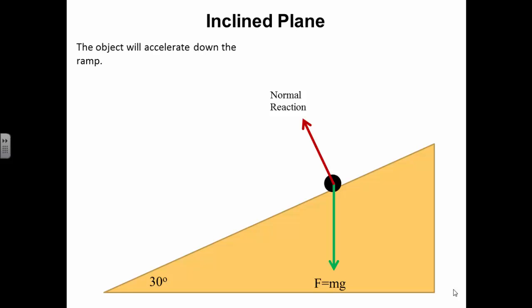Now this object will accelerate down the ramp. So first of all, we need to find the component of the weight which is acting down the inclined plane. So we find the component of the weight parallel to the inclined plane.